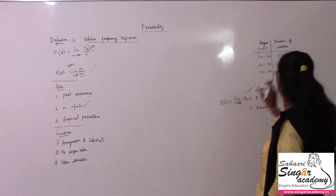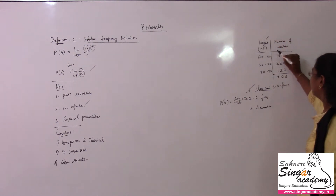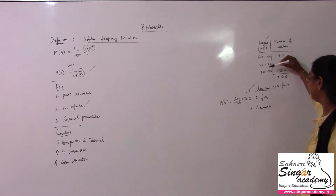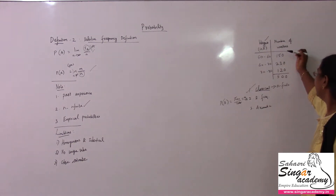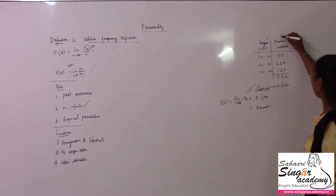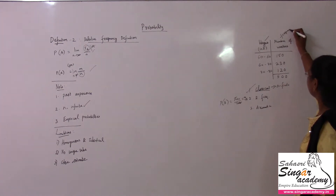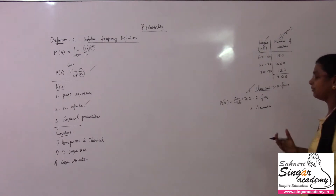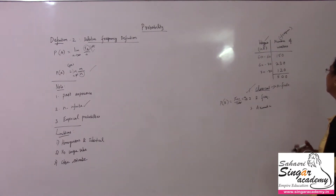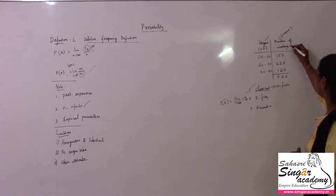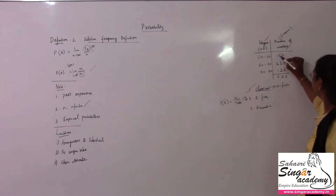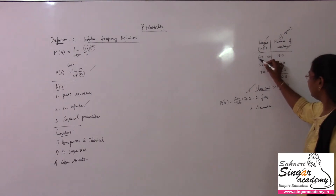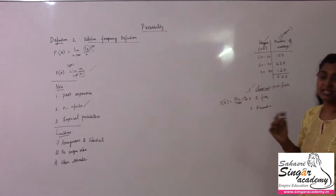I have a problem here for you. There are the wages in rupees: 50 to 60 rupees, 60 to 70 rupees, 70 to 80 rupees is given, and the number of workers. Frequency is the number of happenings, number of repetitions, number that falls in this range — so it is the number count, the frequency.